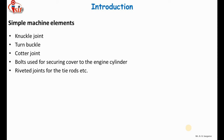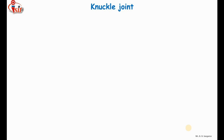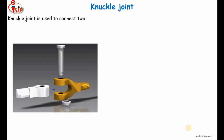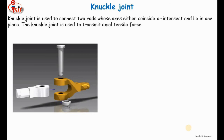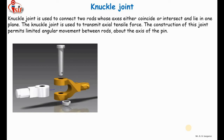In the analysis of these machine elements, we are going to neglect principal stresses, stress concentration, and reversal stresses. Because of these neglections, we are going to select a higher factor of safety of about five. Now let us discuss the knuckle joint. A knuckle joint is used to connect two rods whose axes either coincide or intersect with each other and lie in one plane. The knuckle joint transmits axial tensile force, and its construction permits limited angular movement — it is not suitable for transmitting rotary motion.